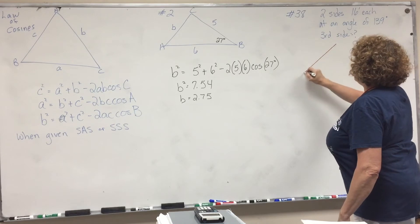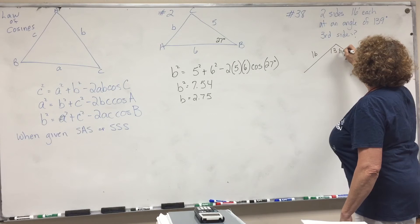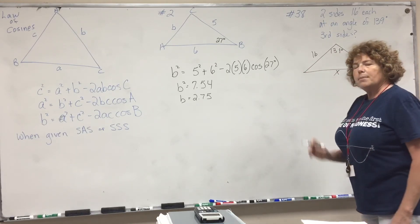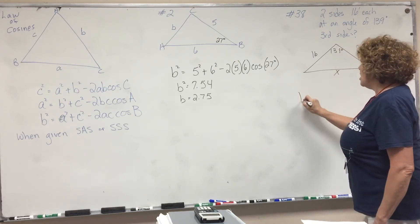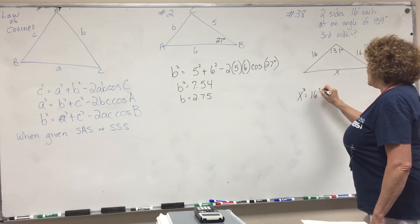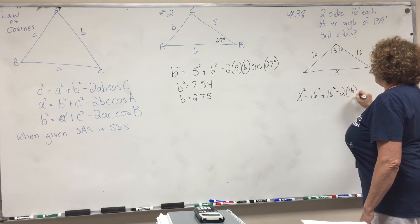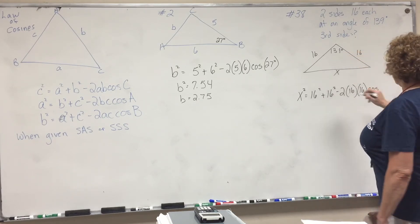So if we draw it, we have 16, 16, 16, and this is 139 degrees. And we are looking for this. Now, remember, the law of cosines says the side across is equal to the other two sides squared minus two times the other two sides times the cosine of the angle that's across from it.